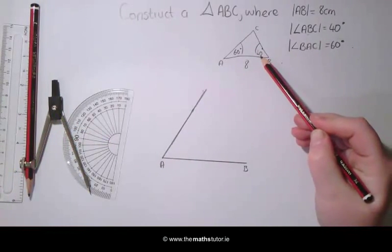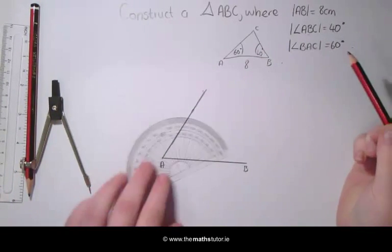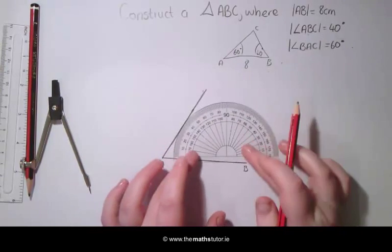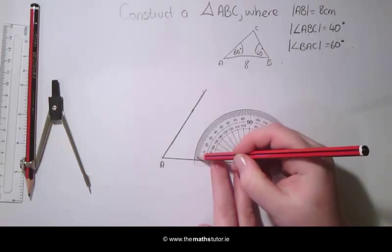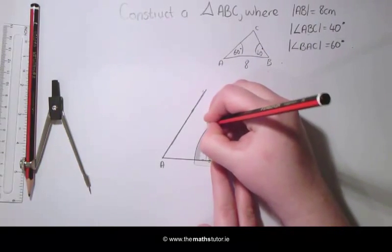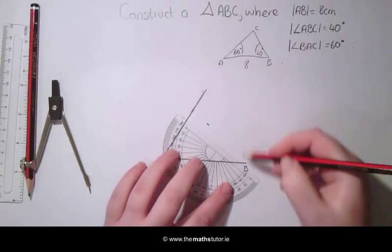We then need an angle of 40 degrees at the point B. So placing our protractor again so that it is in the center and starting from 0, we are going to mark an angle of 40 degrees and draw a line through this.